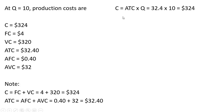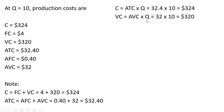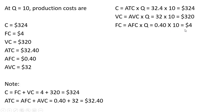Note also that total cost equals average total cost times quantity: $32.40 times 10 units of output gives total cost. Variable cost can be thought of as average variable cost times quantity: $32 times 10 gives variable cost. Fixed cost equals average fixed cost times quantity: $0.40 times 10 gives total fixed cost of $4.